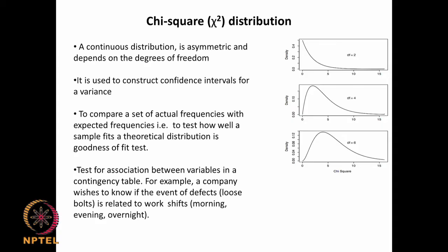What is chi-square distribution? This is also a continuous distribution, just like the normal distribution, but it is somewhat related to the binomial at some point. It is asymmetric and depends on the degrees of freedom. For example, if you have very low degrees of freedom it looks very skewed, and as the degrees of freedom increases, it slowly becomes less skewed.